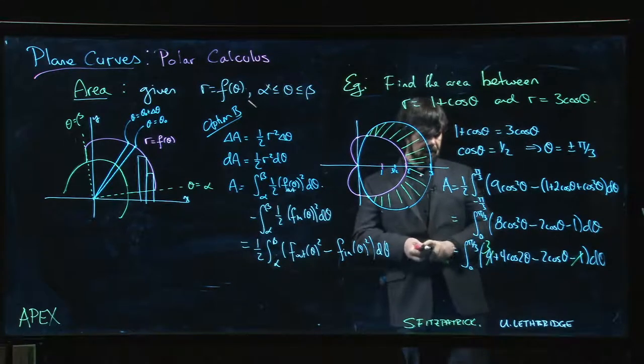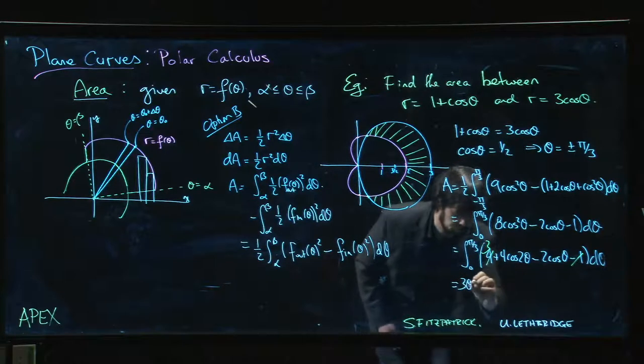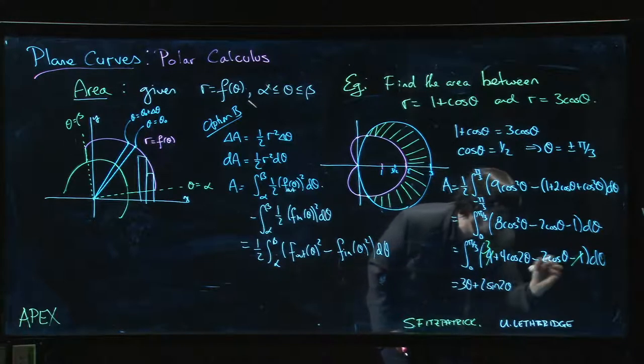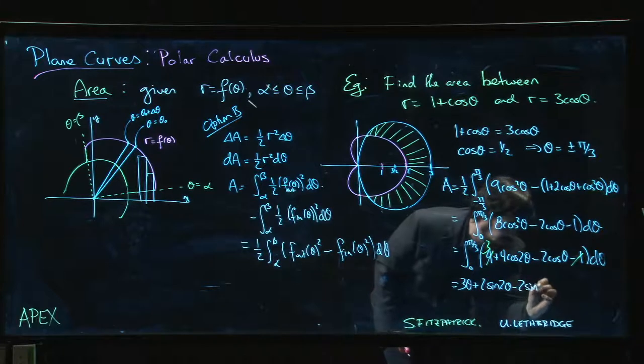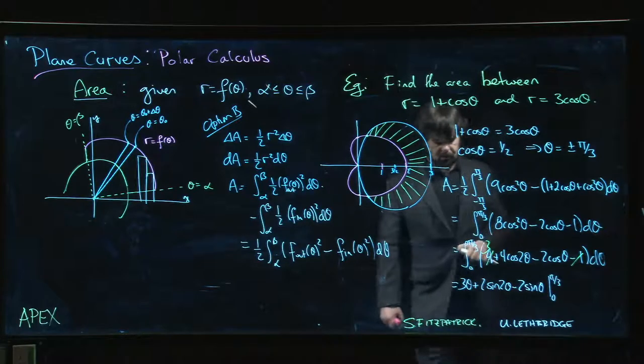And we could do the four minus one and simplify that to a three. So we integrate. We get three theta, we get two sine two theta from that one, and we get minus two sine theta from that one. And all that's left is to plug in those limits, zero to pi over three.